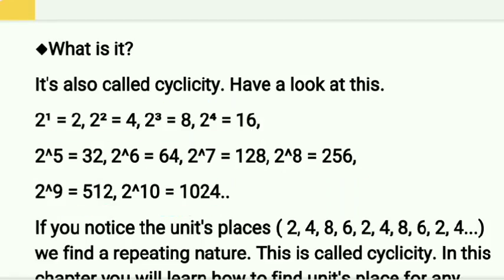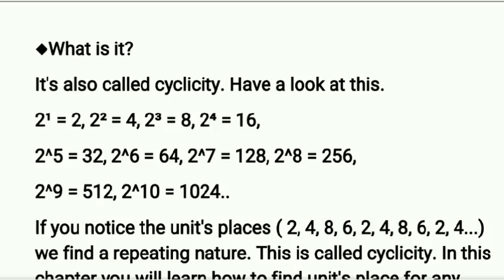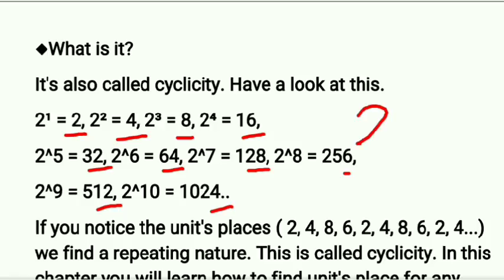Now you will see an interesting pattern here. Have a look at the unit digits: 2, 4, 8, 6, then 2, 4, 8, 6 — only this pattern repeats, no other number. So whenever you have 2 power anything, it will always follow the 2, 4, 8, 6 pattern. This repeating pattern is called cyclicity.